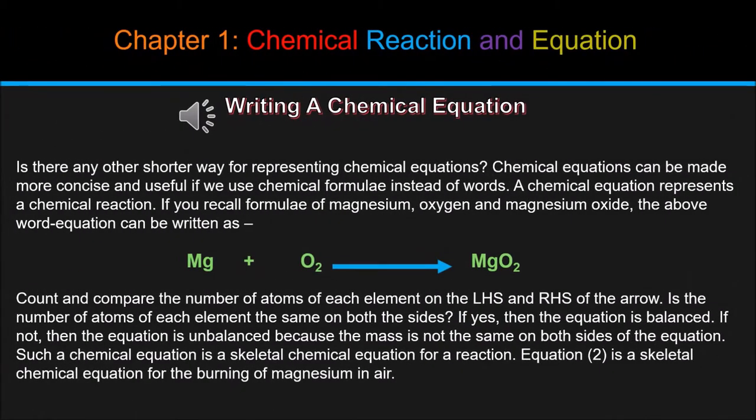Now, our next topic is writing a chemical equation. Is there any other shorter way for representing chemical equations? Chemical equations can be made more concise and useful if we use chemical formulae instead of words. A chemical equation represents a chemical reaction. If you recall formulae of magnesium, oxygen and magnesium oxide, the above word equation can be written as Mg plus O2 equals MgO2. Count and compare the number of atoms of each element on the LHS and RHS of the arrow. Is the number of atoms of each element the same on both sides? If yes, then the equation is balanced. If not, then the equation is unbalanced because the mass is not the same on both sides of the equation. Such a chemical equation is a skeletal chemical equation for a reaction. Equation 2 is a skeletal chemical equation for the burning of magnesium in air.